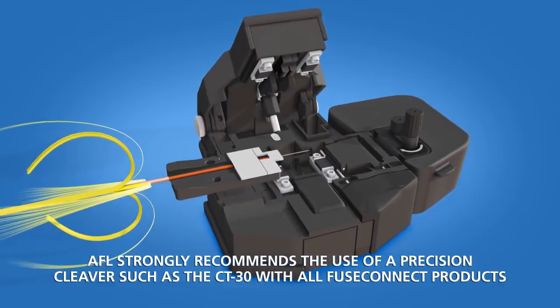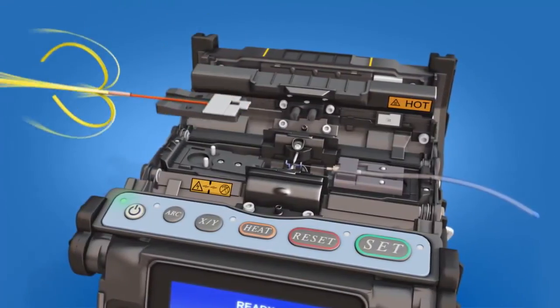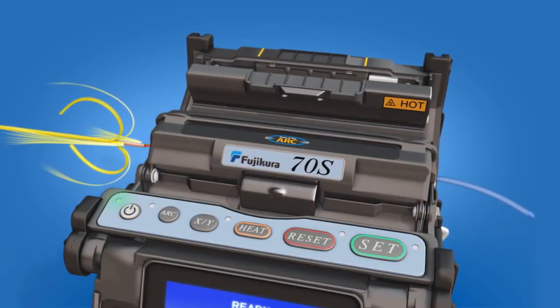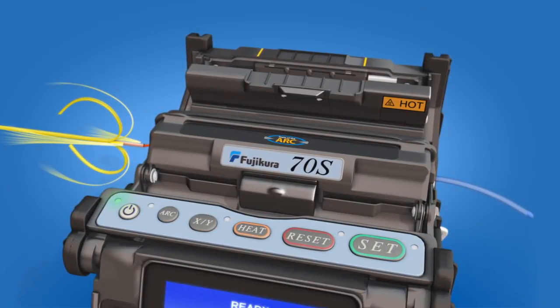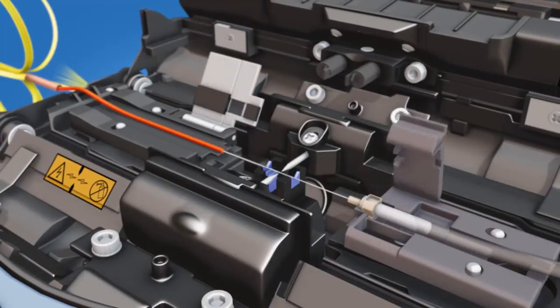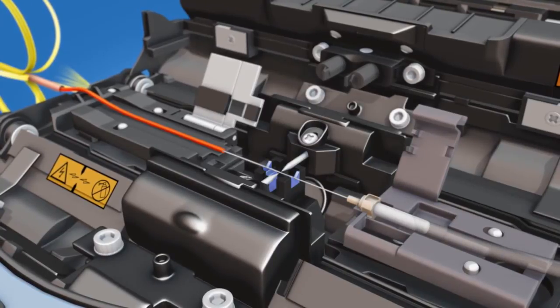Carefully remove the fiber holder with the cleaved fiber end from the precision cleaver. Load the fiber holder into the splicer and close the wind protector. Splice the fiber to the fuse connect connector. Open the fiber holder and the ferrule unit holder clamps after the splicer has performed a tension test on the splice.